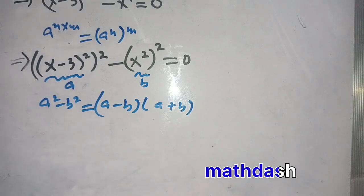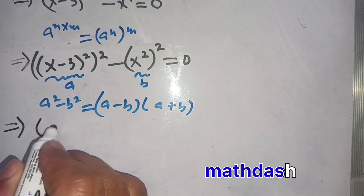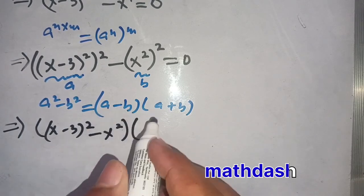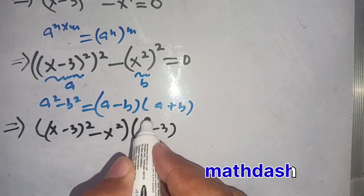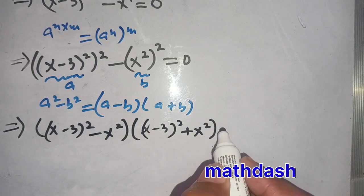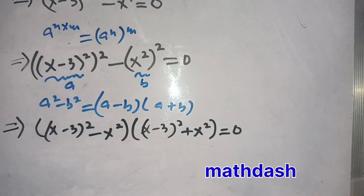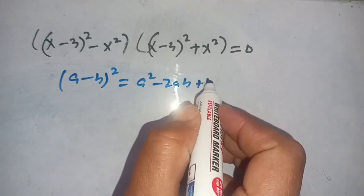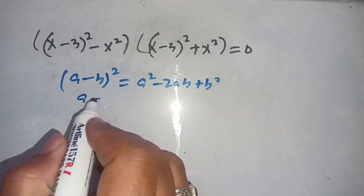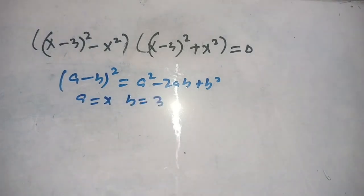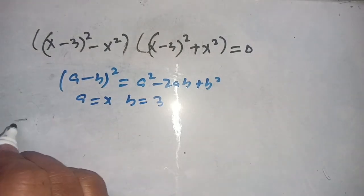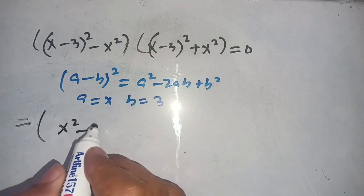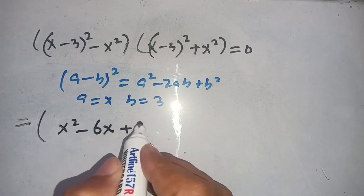Using this identity, our equation becomes (a minus b) times (a plus b) equal to 0. Now, we also use the identity (a minus b) squared equals a squared minus 2ab plus b squared. Applying this, (a minus b) expands to x squared minus 6x plus 9, and (a plus b) gives x squared plus x squared.